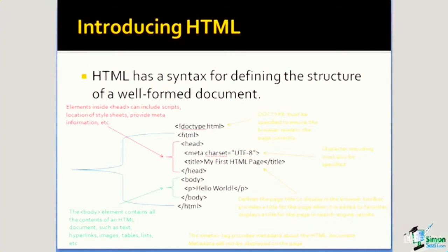Like any computer language, HTML has a syntax — a set of rules that define how the language must be presented to the computer. In this case, how the language is presented to the browser, because it is the browser that interprets our HTML code and presents it to the user. So the first line of any HTML document must define the document type. This tells the browser how it should interpret the code that follows in the file.